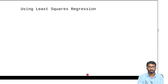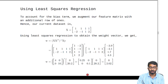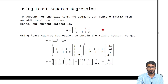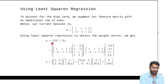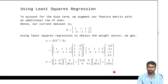Now let's use this least squares regression closed form solution on our data set. Before that, we'll add a row of ones to account for the bias in our data set. Plugging in the values of x and y into the closed form solution and solving for w, we get this as the final step, and this is the final w obtained using least squares regression.